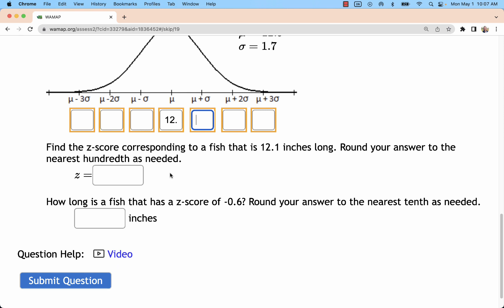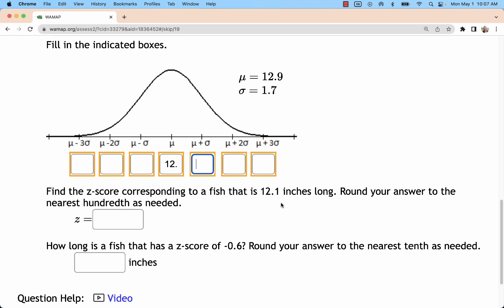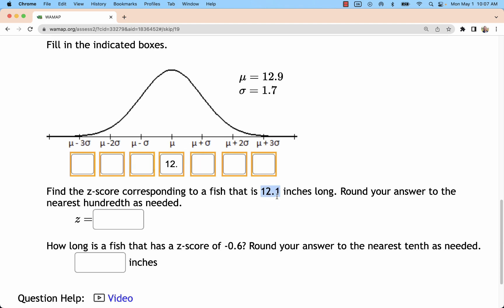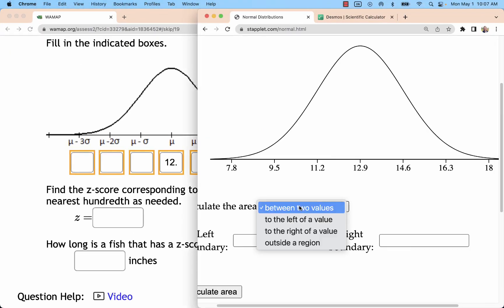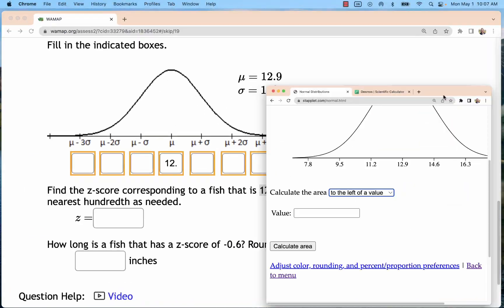For the second part of this problem, you're going to find a z-score and then you're going to use a z-score. If you want to find a z-score, this is a value of x. You could just plug it into Staplet as either a left or right side value, so this problem was 12.1.